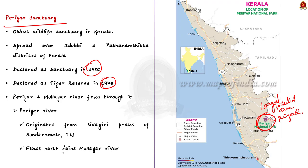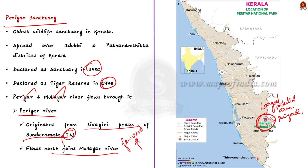The Periyar river arises from the Sivagiri peak of Sundaramala in Tamil Nadu, then moves northward where the westward-flowing tributary Mullayar joins it — note that it is one of the few west-flowing rivers in our country. The sanctuary comprises tropical evergreen, semi-evergreen, moist deciduous forest and grasslands, with about 1,966 species of flowering plants, of which about 516 are endemic to the western ghats. The sanctuary is also a repository of around 300 medicinal plants.